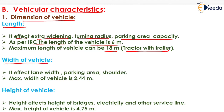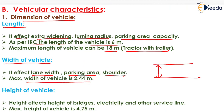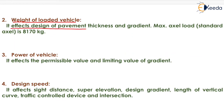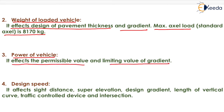The width of a vehicle affects lane width, parking area, and shoulder design. Maximum width is 2.44 meters as per IRC. The height of a vehicle affects bridge clearances and electricity and service lines; maximum height is 4.75 meters. The weight of a loaded vehicle affects pavement thickness and gradient design; maximum standard axle load is 8170 kg. The power of the vehicle affects permissible and limiting values of gradient.